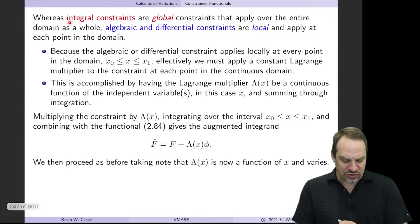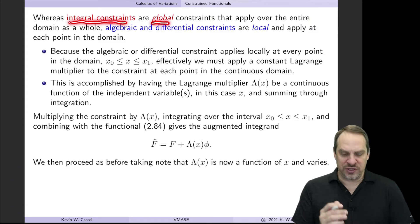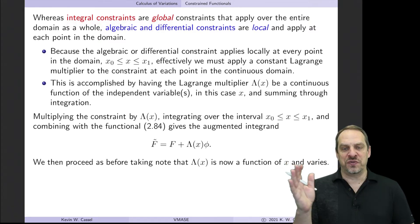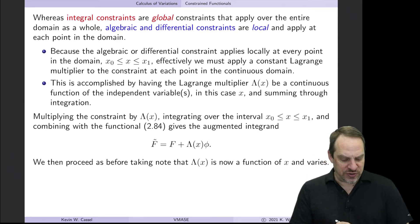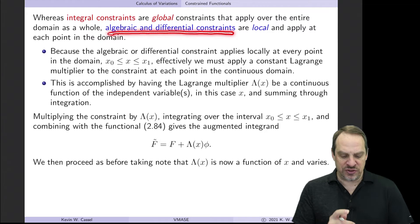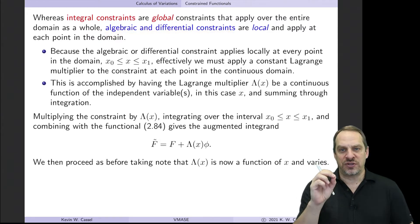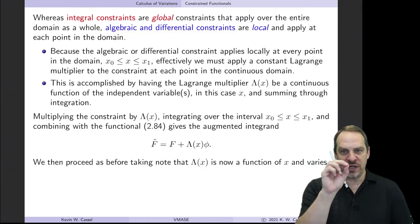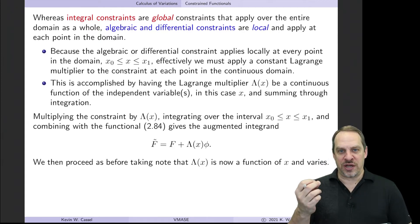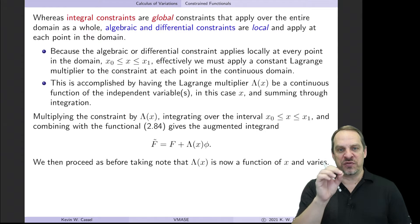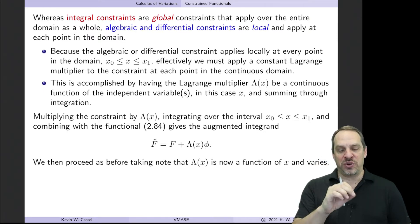Integral constraints are global constraints because they're definite integrals over the entire domain — one constraint on some aspect of the entire solution. Whereas algebraic and differential constraints are local constraints: they're constraints on the relationship between u and v at every point throughout the domain. So because the constraint applies locally at every point, you need a Lagrange multiplier for every point in the domain.